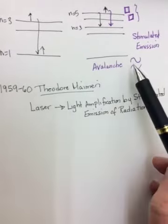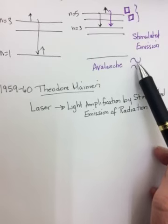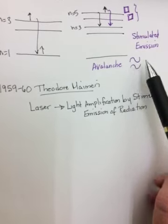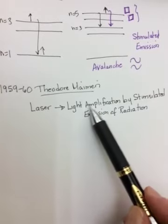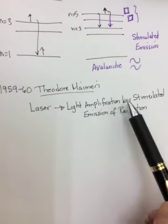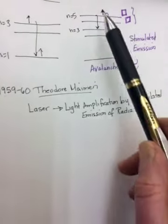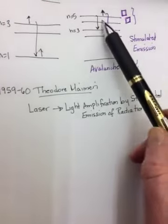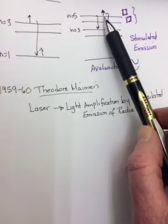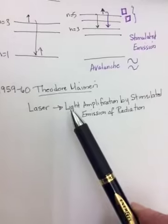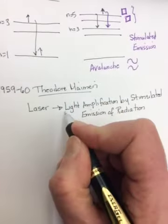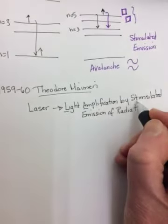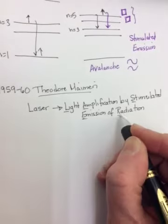So light amplification by stimulated emission of radiation. Light amplification, right? Photons are being emitted in phase. So you get a really big added together wave. How is it happening? By stimulated emission of radiation. You're stimulating the atoms to emit the photons. Laser: light amplification by stimulated emission of radiation.